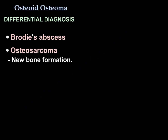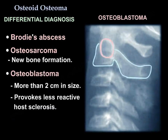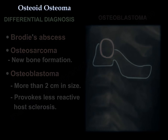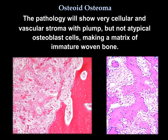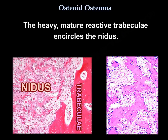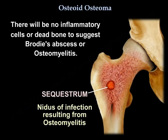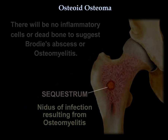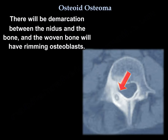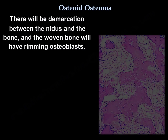Also consider osteosarcoma and osteoblastoma, which is more than 2 cm in size and provokes less reactive host sclerosis. Pathology will show a very cellular and vascular stroma with plump but not atypical osteoblast cells, making a matrix of immature woven bone. The heavy mature reactive trabeculae encircle the nidus. There will be no inflammatory cells or dead bone to suggest Brodie's abscess or osteomyelitis, and there will be demarcation between the nidus and the surrounding bone, with the woven bone showing rimming osteoblasts.